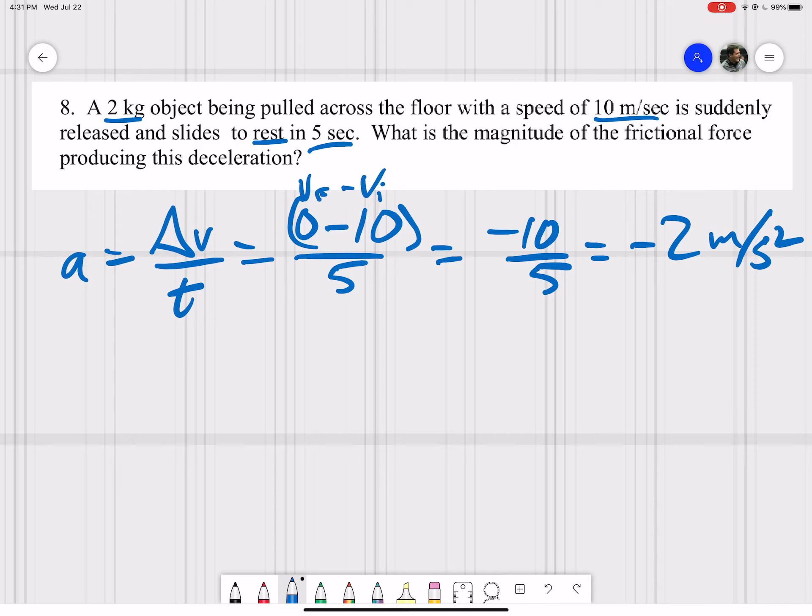That's just the acceleration. Now we have to do F equals MA to figure out our force. Our mass was 2 kilograms, our acceleration is negative 2 meters per second squared, and our answer for force will be negative 4 newtons.